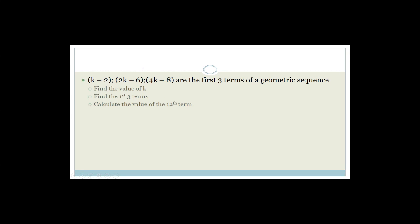So this is a typical exam question. It gives you k minus 2, 2k minus 6, and 4k minus 8 as the first three terms of a geometric sequence. Remember, a geometric sequence has a common ratio — it's AR to the N minus 1, where A is your first term, N is the nth term, and R is your common ratio, which is T3 over T2, which also equals T2 over T1. As soon as you see the word geometric, you should be thinking common ratio.